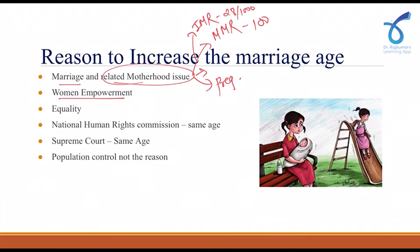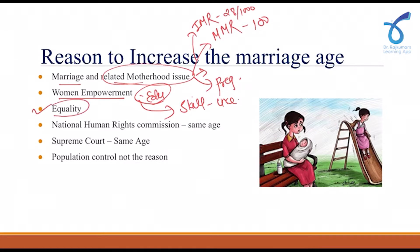The second reason is to make women empowered. If the age of marriage for girls is increased by three years, it will be beneficial for girls to complete their education. It can help them get the necessary skills for livelihood, and they can become independent with respect to financial requirements.